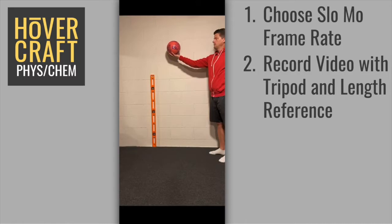It is important that whatever object you're tracking is the same distance from the camera as your length reference. If your length reference item is closer to the camera, it will appear bigger. And if it's further away from the camera, it will appear smaller. Both of these will affect the measurements.